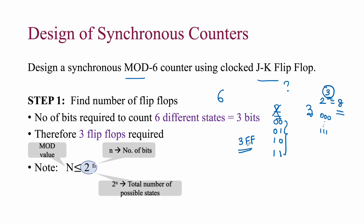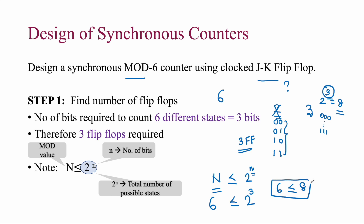We must always remember that the modulus value n should satisfy n ≤ 2^k, where k is the number of bits. Here n = 6 and k = 3, so we check: 6 ≤ 2³ = 8. The condition is satisfied, so we will use three JK flip-flops to implement the mod 6 counter.